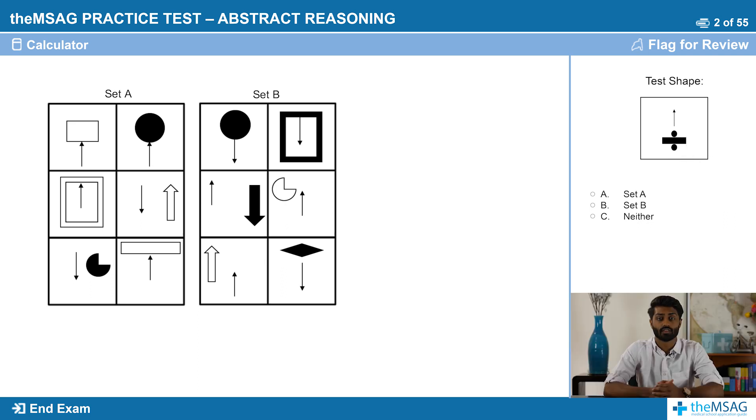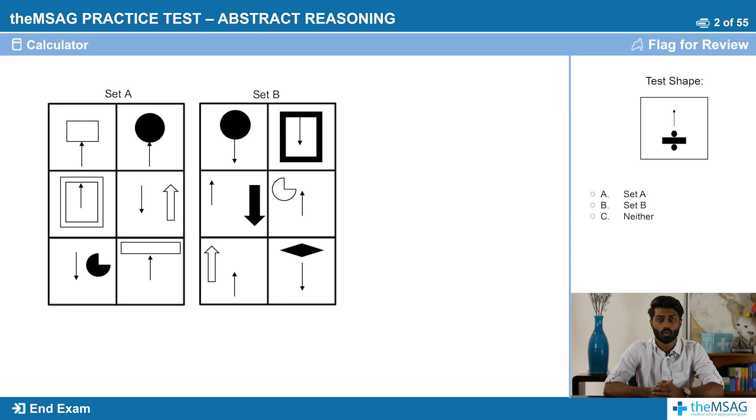The correct answer was that the test shape belonged in set A. But what was the pattern? As you might have guessed, this was another conditional pattern. But it was a conditional pattern with an unusual twist, symmetry. We have not covered the property of symmetry so far on this course, because it rarely comes up, but we do want it to be a property that rings a bell if it comes up in the test.